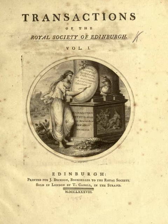Hutton's work was published in different forms and stages. 1788: Theory of the Earth, or an Investigation of the Laws Observable in the Composition, Dissolution, and Restoration of Land Upon the Globe. Transactions of the Royal Society of Edinburgh, Volume 1, Part 2, pp. 209–304. 1795: Theory of the Earth, with Proofs and Illustrations. 2 Vols, Edinburgh, Creech.